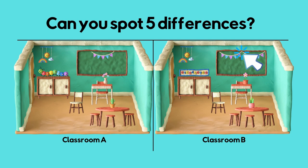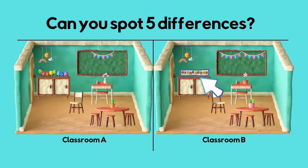In Classroom A, there is only one streamer or bunting. In Classroom B, there are two. The flowers on the desk are different. In Classroom A is a caterpillar. In Classroom B are numbers. The plants on the table are different. The chair is backwards.